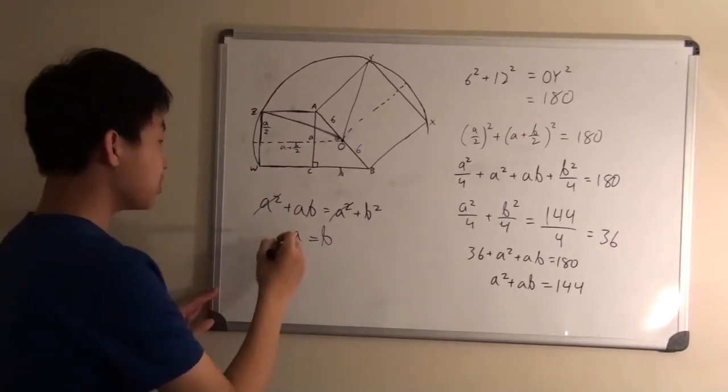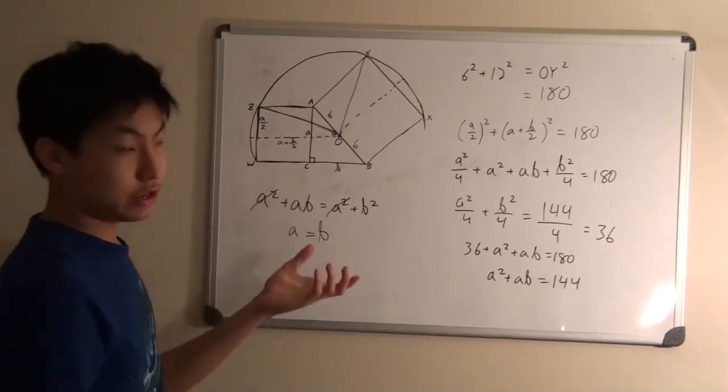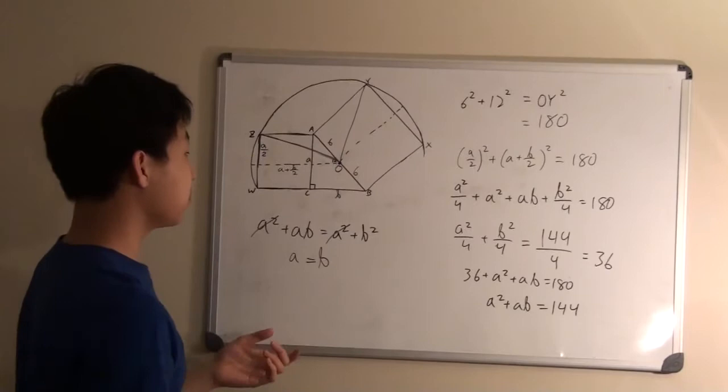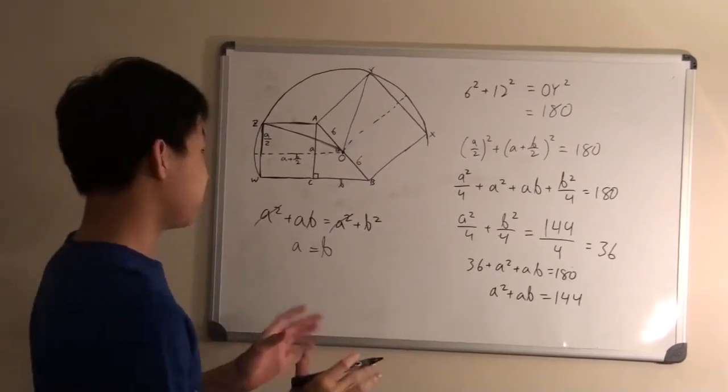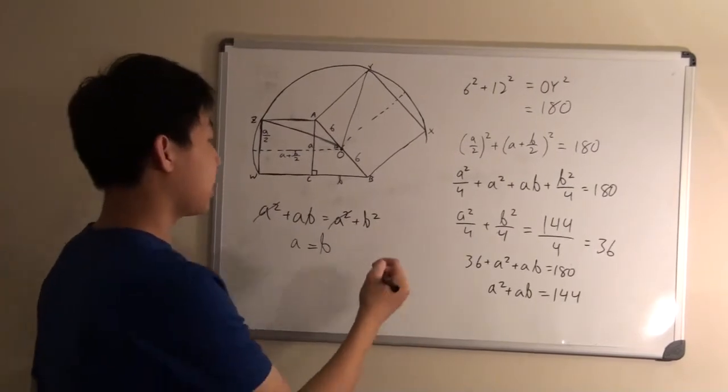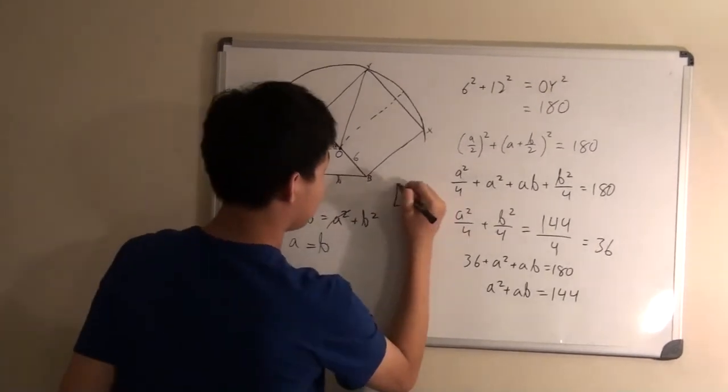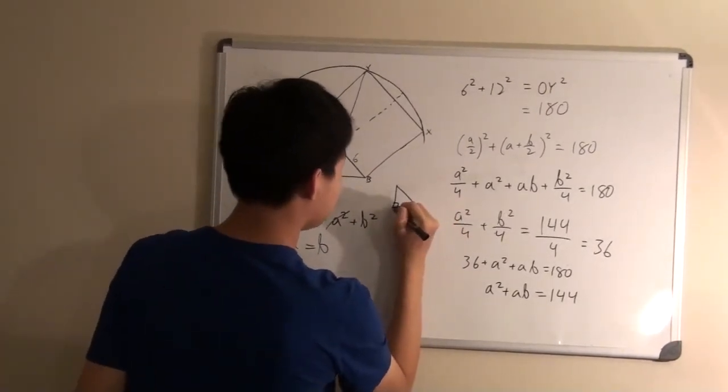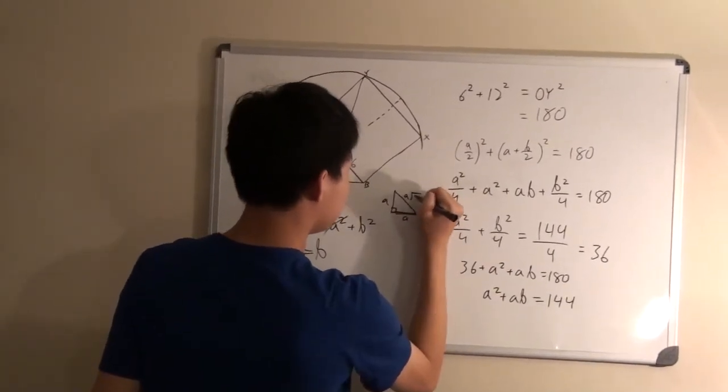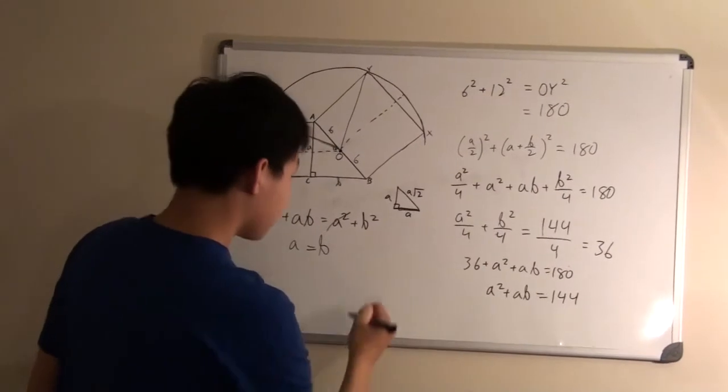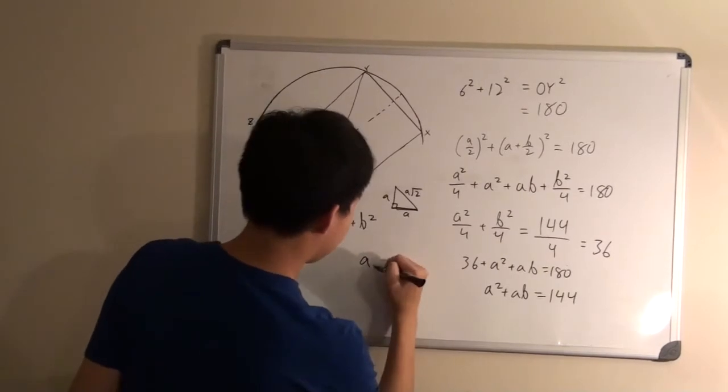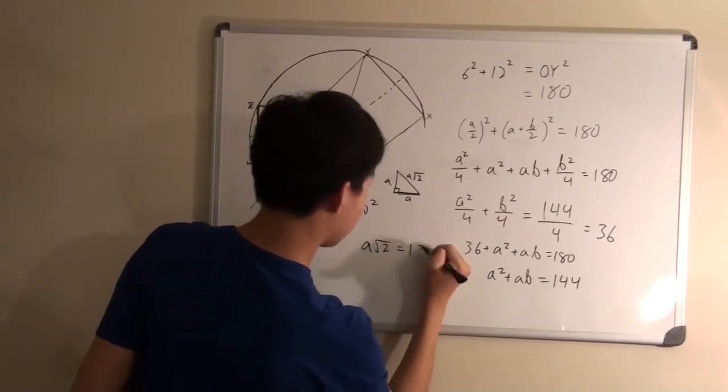From here we just know that ABC is just an isosceles right triangle. So that would mean the legs would be both the same length, but more importantly we know that the ratio of an isosceles right triangle would be A, A, A root 2. So A would equal to A, A root 2 would equal to 12.